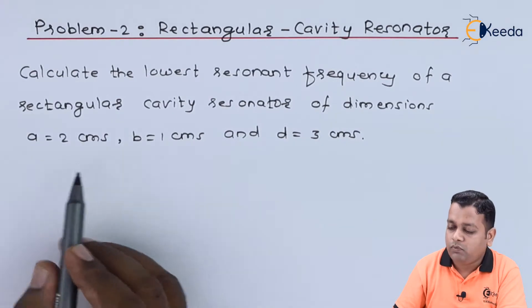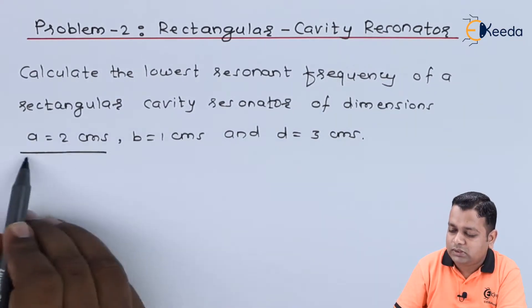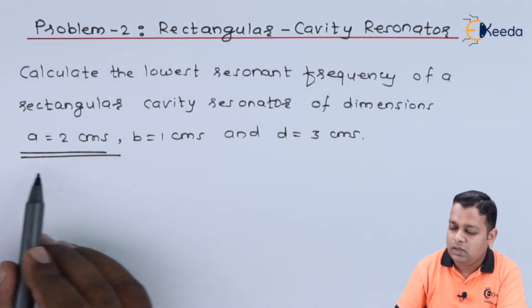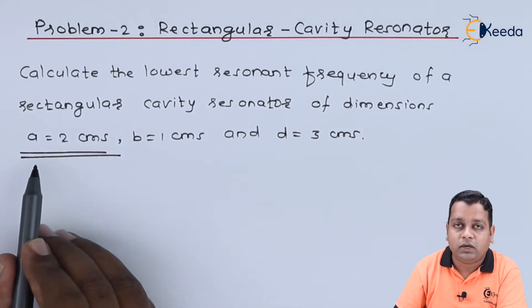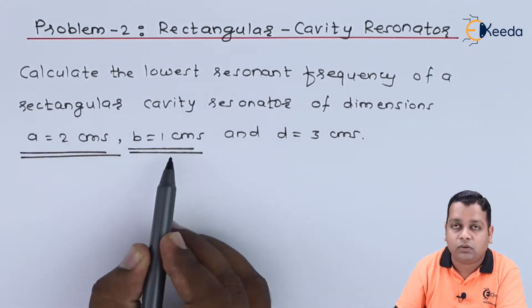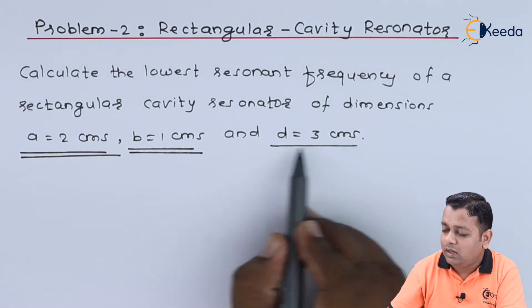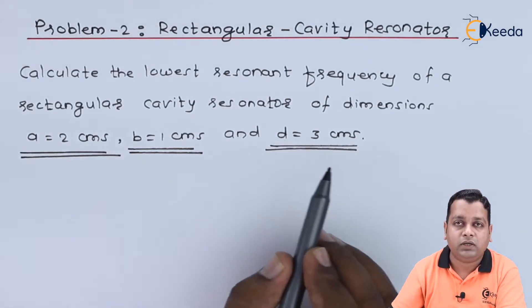In this problem statement, we are provided all three dimensions: the breadth of the rectangular cross section, width of the rectangular cross section, and length of the cavity resonator.